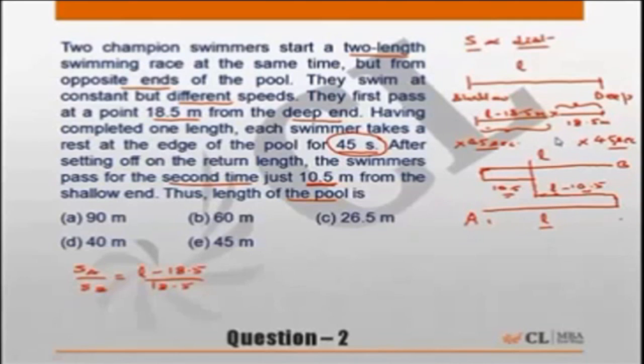So ratio of distance has to be ratio of speed, but this should also hold true when I look at the second time of meeting. So the distance covered by the person from the shallow end A for the second meeting is L plus L minus 10.5, or 2L minus 10.5, and the distance covered by the second person or the person from the deep end will be L plus 10.5.